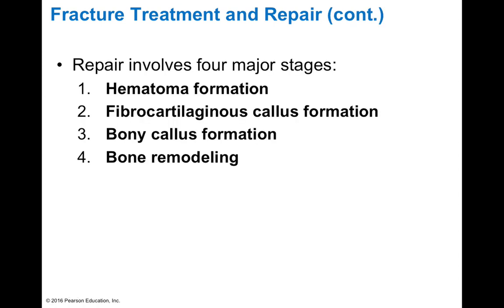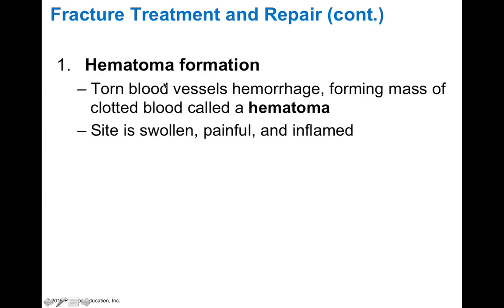Bone fracture repair occurs in four major stages. The first stage is the hematoma or blood clot, which forms almost immediately. Because bone is highly vascular, when it breaks the blood vessels also rupture. Blood leaks out into spaces forming a hematoma. Next, a fibrocartilaginous callus forms as the blood clot converts to fibrocartilage. That fibrocartilage is then converted into bony material — a bony callus. Finally, bone remodeling occurs over weeks and years.